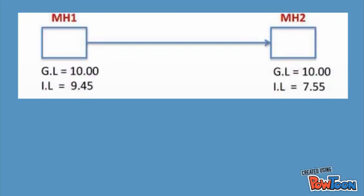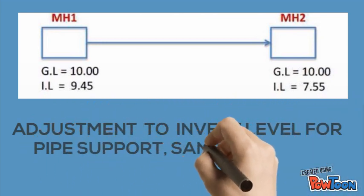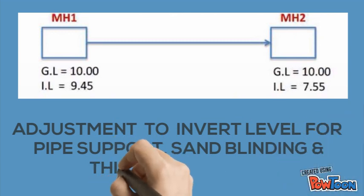After you find the invert level and ground level, we need to do an adjustment to invert level for pipe support, sand blinding, and thickness of pipe.